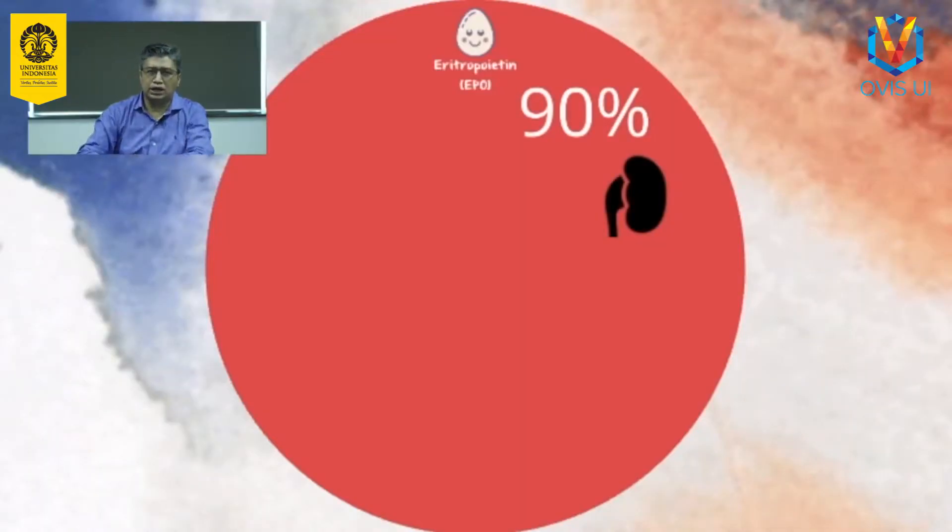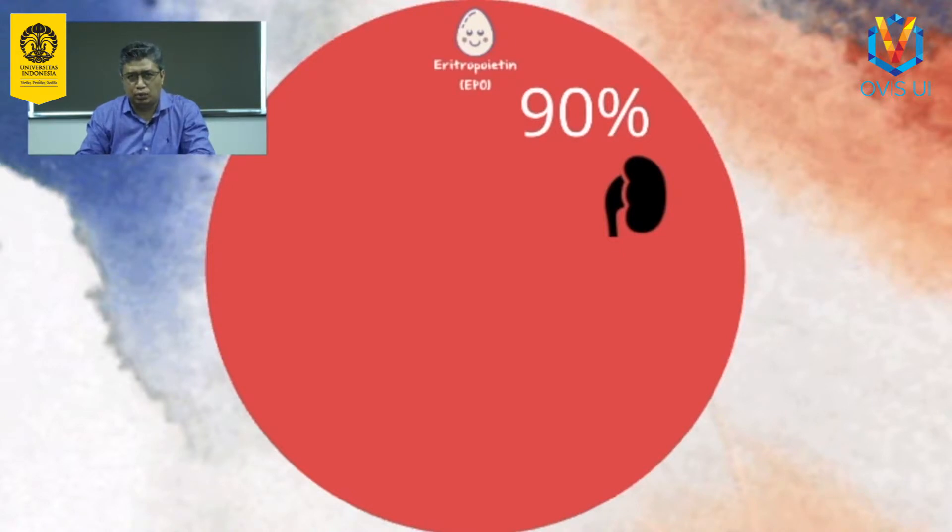Warna prekursor juga berubah dari basofilik menjadi kemerahan karena peningkatan kandungan hemoglobin dan berkurangnya kandungan RNA pada sel. Proses eritropoiesis tidak lepas dari pengaruh berbagai faktor. Faktor yang berpengaruh secara langsung terhadap eritropoiesis antara lain hormon eritropoitin sendiri, kemudian pengaruh asam folat dan vitamin B12, serta zat besi.